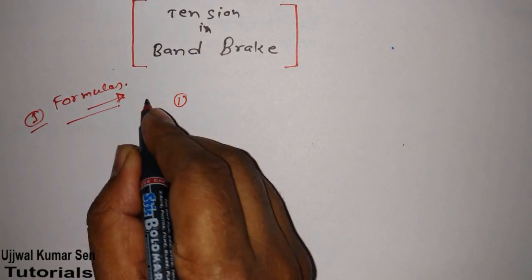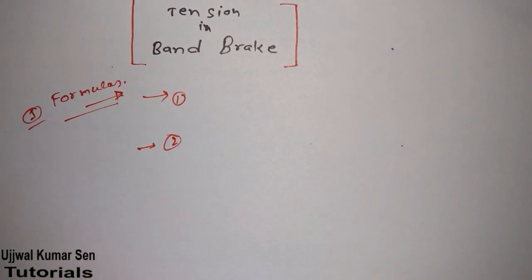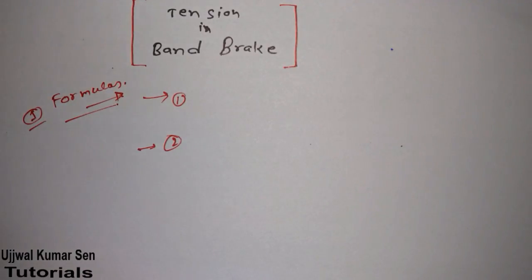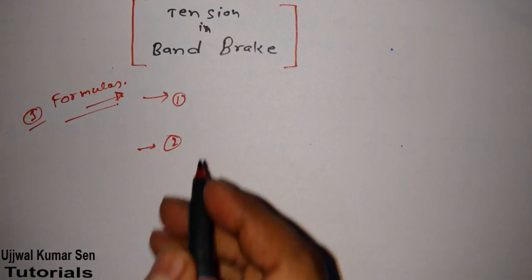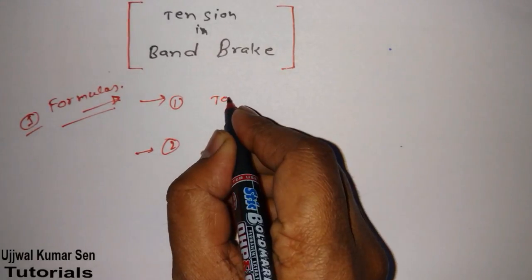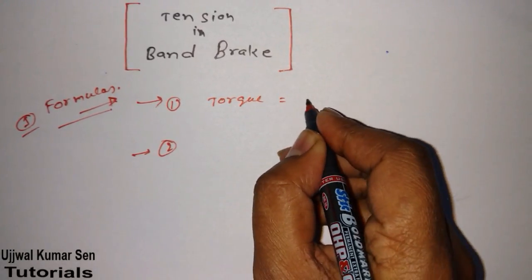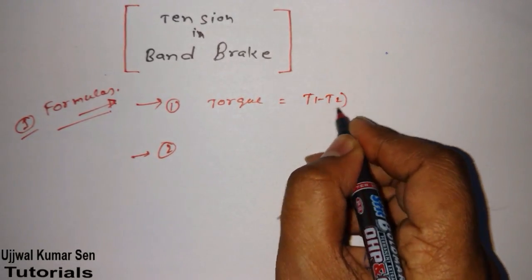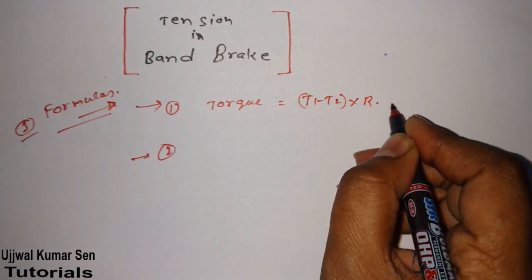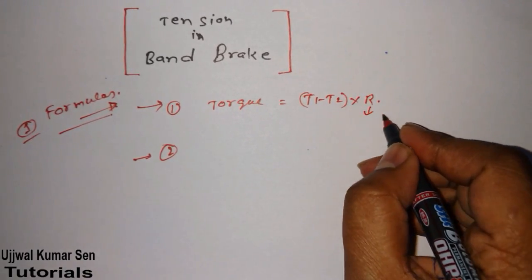So we got two formulas actually we required to find out band brake. What are those formulas that is the key to get success in numerical problems? First formula is torque is equal to T1 minus T2 into R. Or you can, this R is radius.